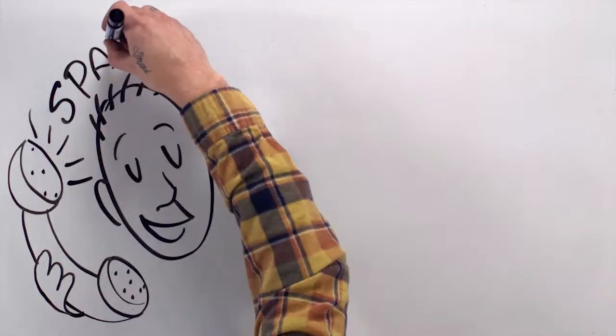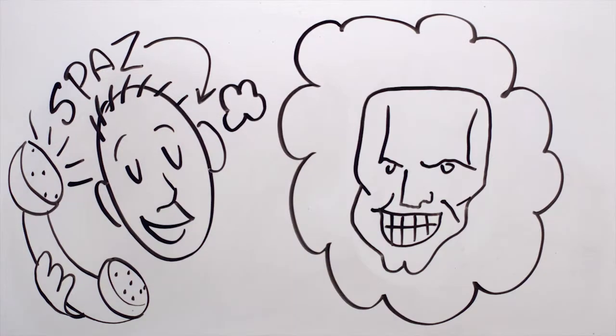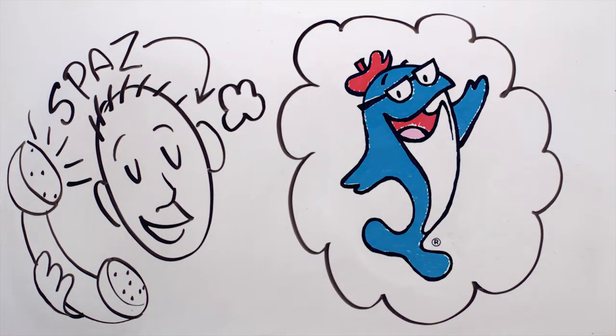Our first call? Hollywood CGI legend Spaz Williams. Jurassic Park. The Mask. T2. And now, Charlie the Tuna. The 21st century version.